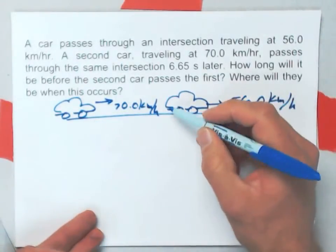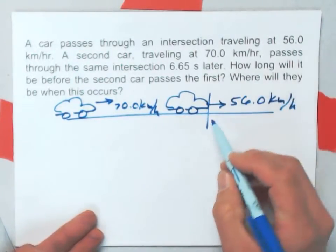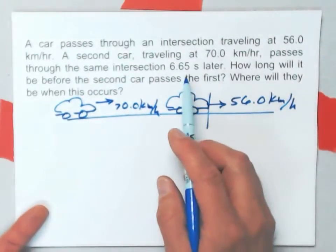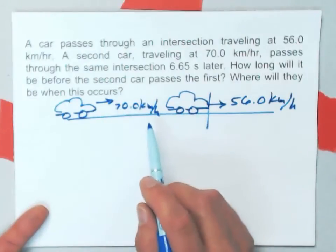This could be the instant at which the first car passes some point in the intersection. And 6.65 seconds later the second car does that.